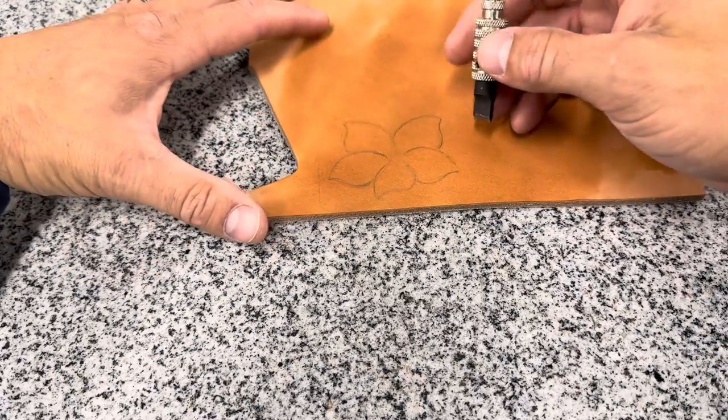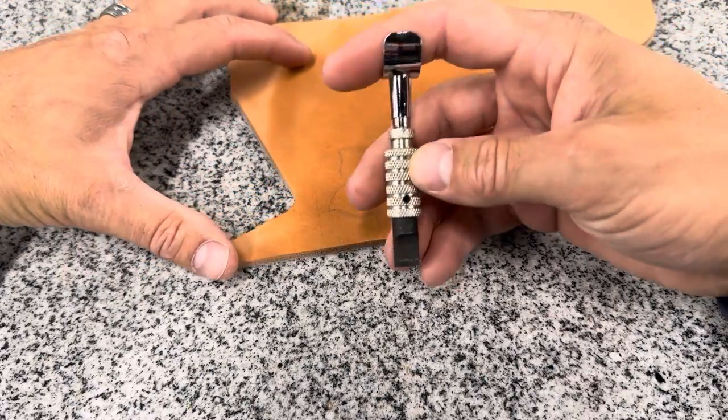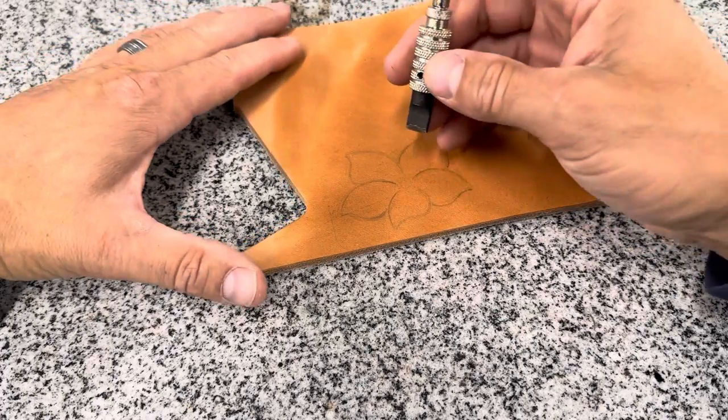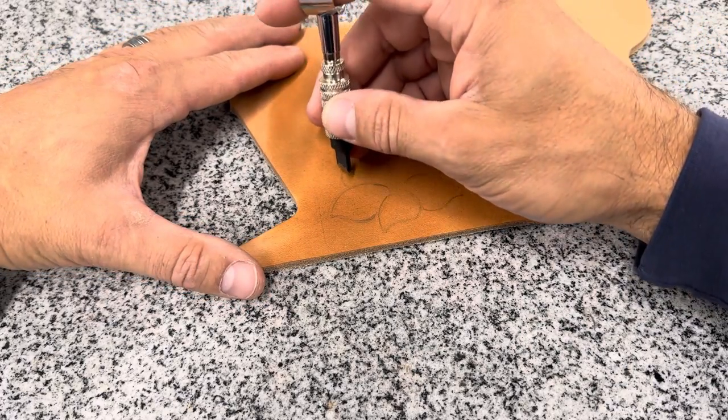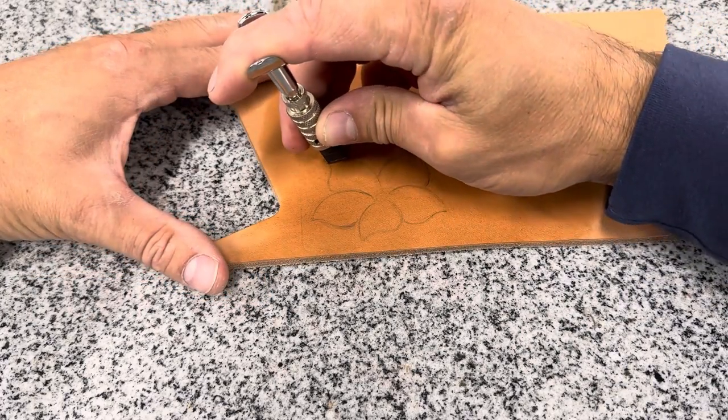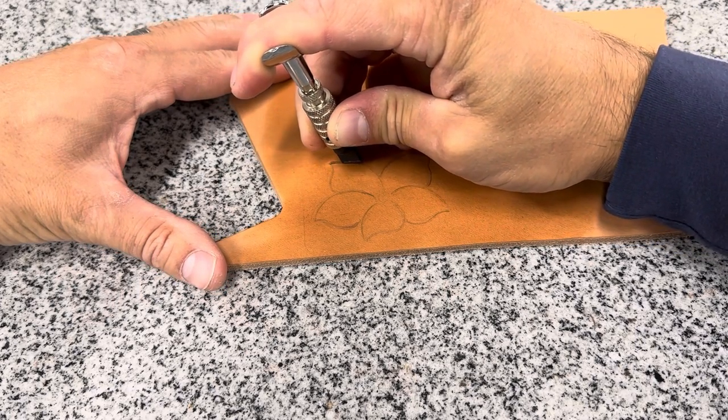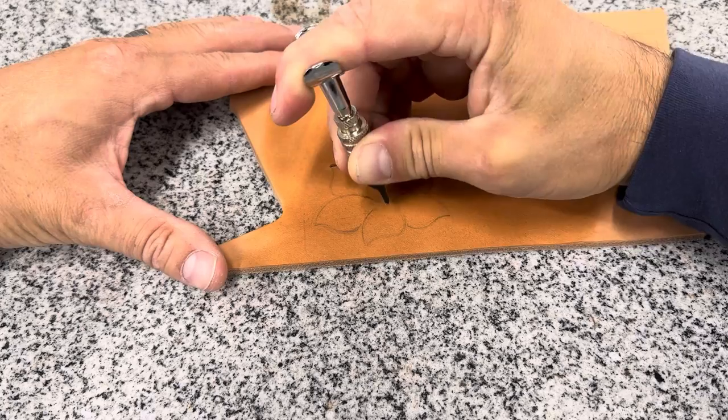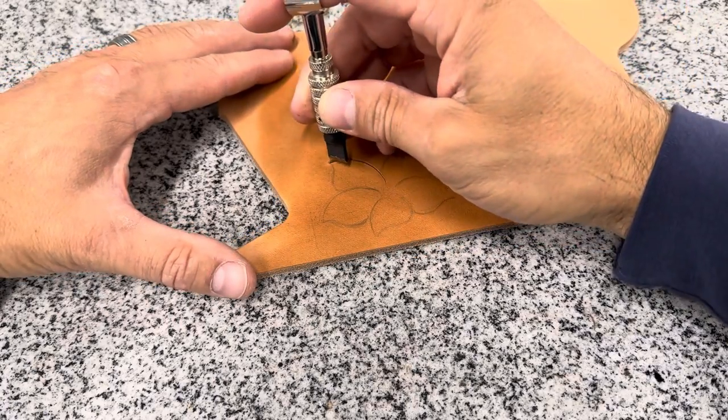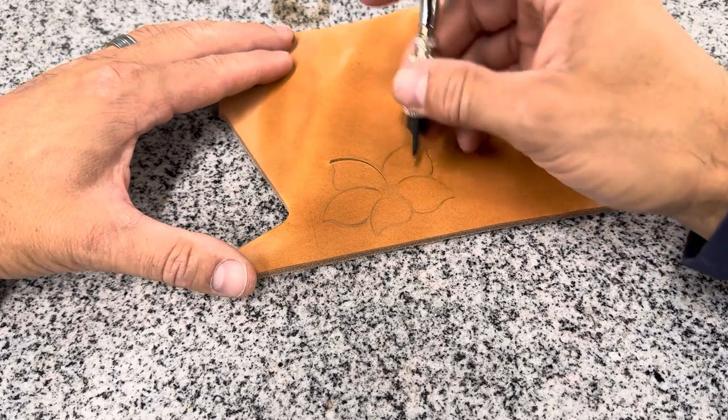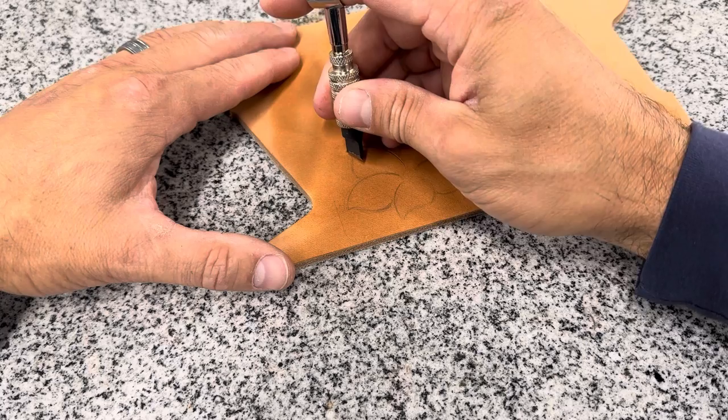So starting at that point we need to cut this in so our initial cuts come from this swivel knife. I'm going to start out at the tips of these flowers I'm going to be tipping that knife pulling towards me here and following our lines that are transferred there. Now all the edges of these petals are pulling towards our flower center here.